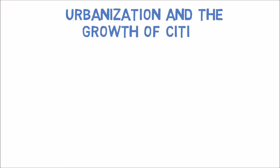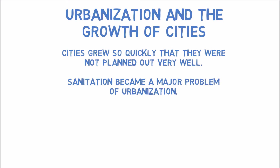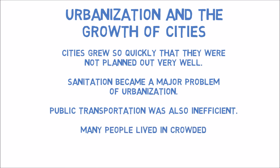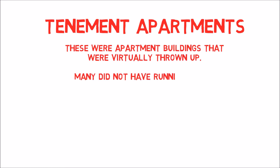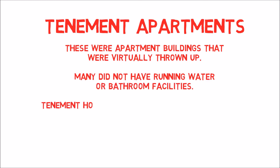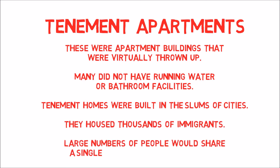Cities grew so quickly that they were not planned out very well. Sanitation became a major problem of urbanization. Public transportation was also inefficient, and many people lived in crowded tenement apartments. These were apartment buildings that were virtually thrown up — many did not have running water or bathroom facilities. Tenement homes were built in the slums of cities, housing thousands of immigrants, with large numbers sharing a single-room apartment.